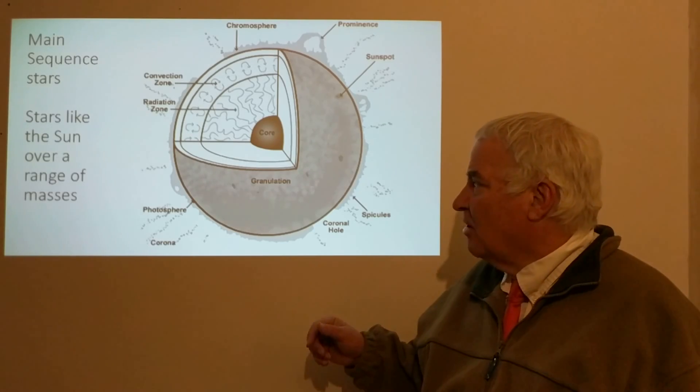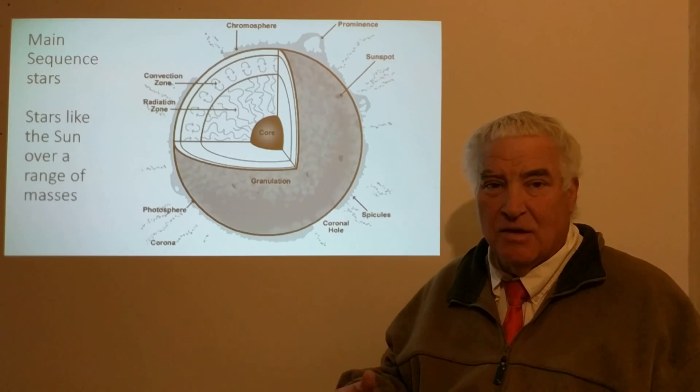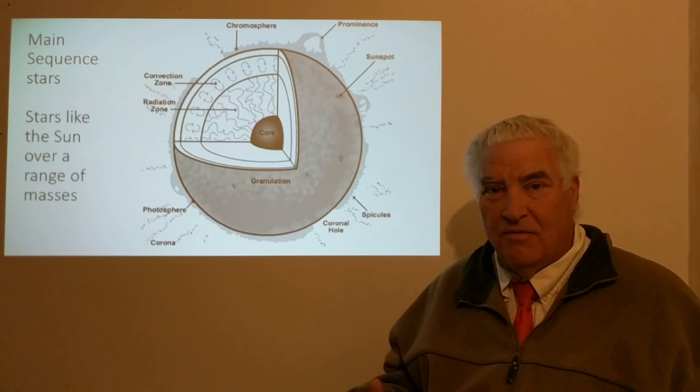The main sequence stars will vary over a range of masses, and so the Sun at one solar mass, we use the mass of the Sun as our convenient unit.